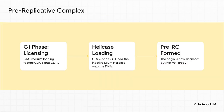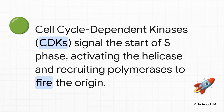This whole process is called licensing, and it happens only during the G1 phase of the cell cycle. The ORC complex calls in two helper proteins, CDC6 and CDT1, whose job is to literally pry open that MCM helicase ring and thread it onto the DNA. This whole setup — the ORC, the loaders, and the inactive helicase — is called the pre-replicative complex, or pre-RC. The origin is now officially licensed, but it is still waiting for the green light. That fire signal arrives at the beginning of S phase, when the levels of cell cycle dependent kinases, or CDKs, start to rise. They act like a master switch, going around phosphorylating parts of the pre-RC, which finally flips the switch on the MCM helicase, activating it to start unwinding the DNA and calling in the rest of the replication team. The origin has now fired.